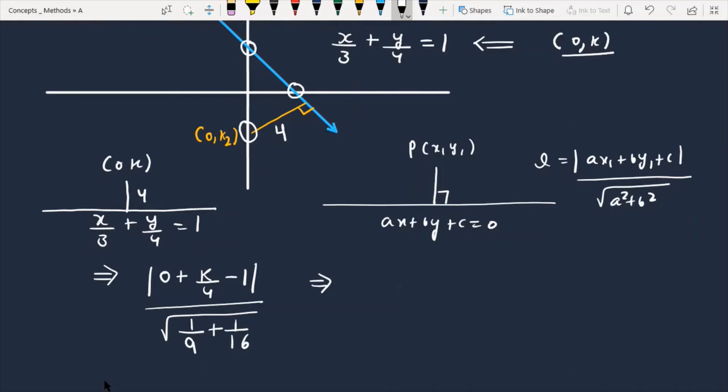You will get |k - 4|/4. This is 16 plus 9 upon 16 into 9, so 16 you can cancel, and this data should be 4 units given.